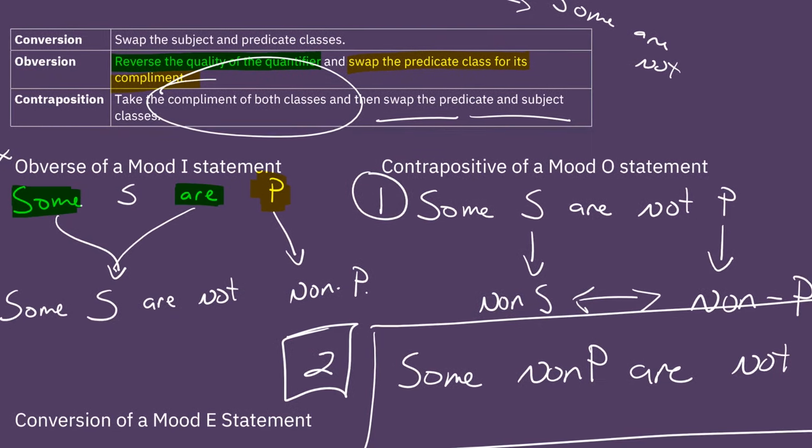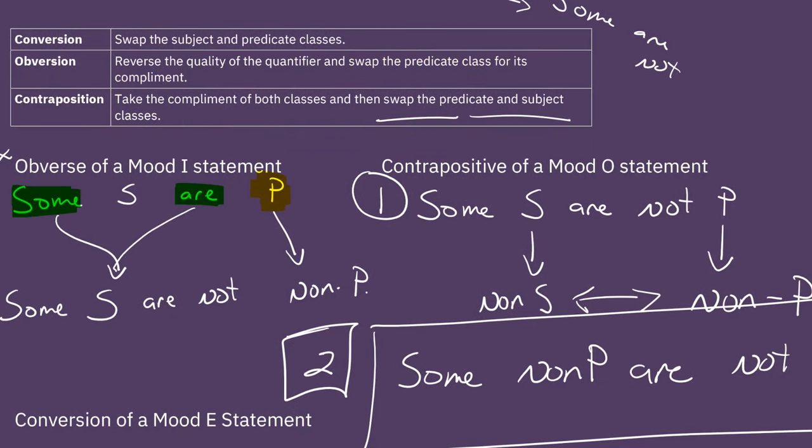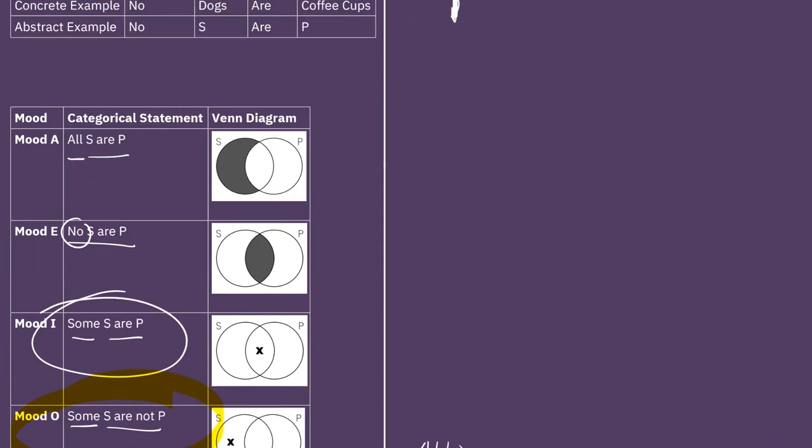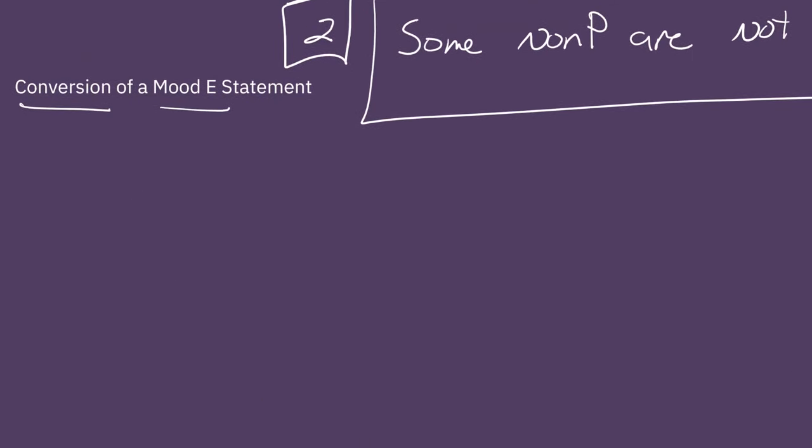Then our third example is we're going to look at a conversion of a mood E statement. So let's go back up and look at what a mood E statement looks like. So it is no S are P. So let's write that down first. No S are P.